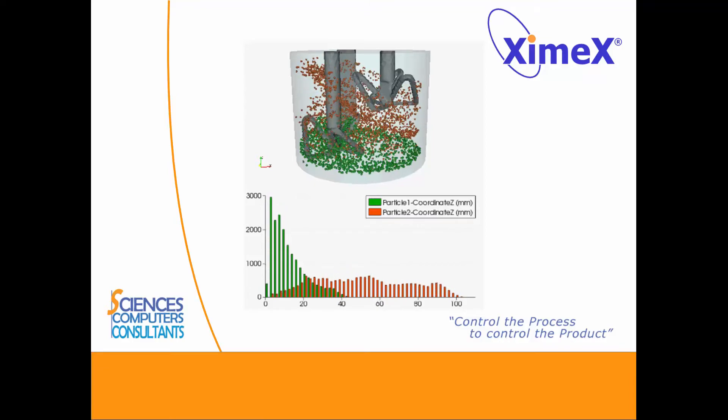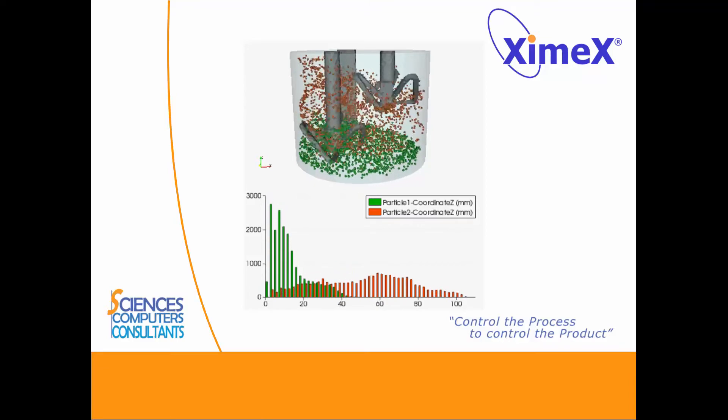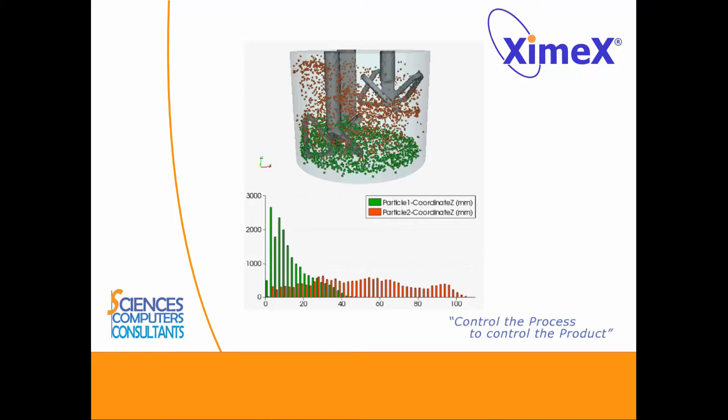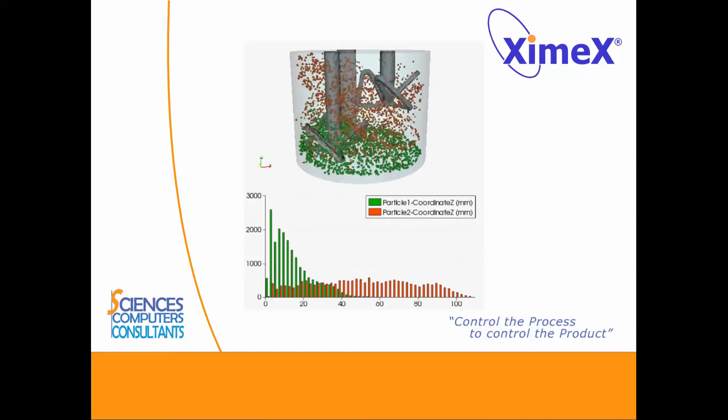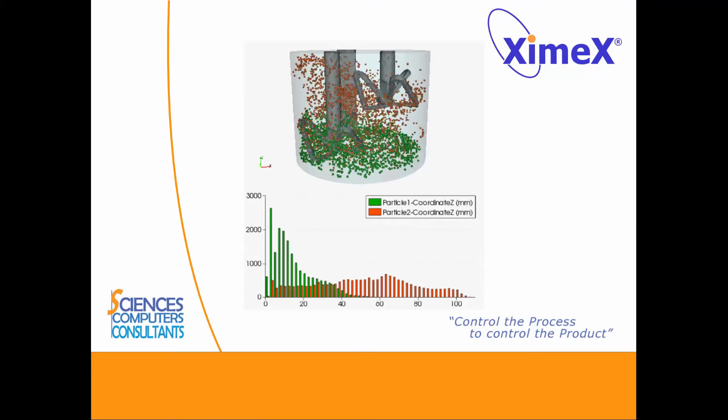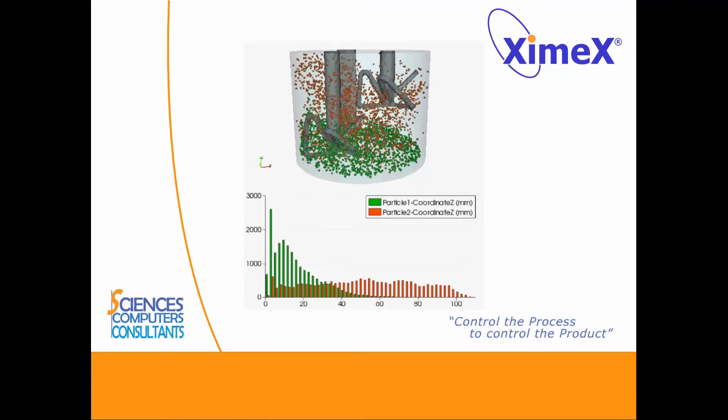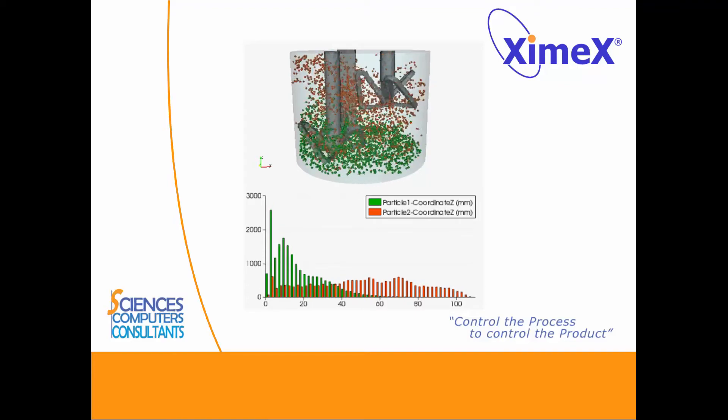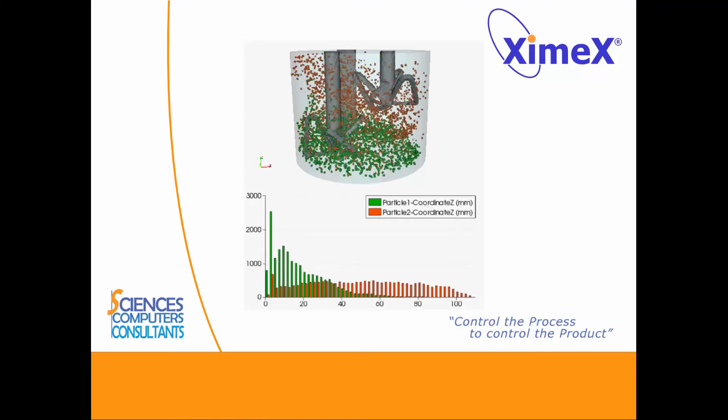Here, we can see the evolution of Z-coordinates for two layers in the batch mixer. After a certain time, we can see that both sets of particles start mixing. Here, the required mixing time is then longer than 120 seconds.